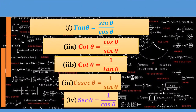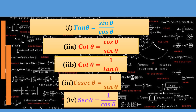Now from the very common ratios, we can have other ratios. We have the tangent, which is given by sine over cosine, and the cotangent is given by cosine over sine.